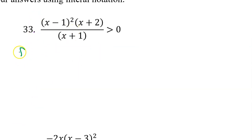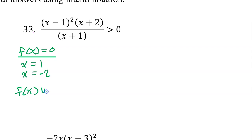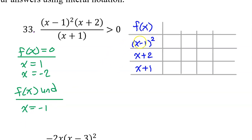Number 33. Again, begin by listing the zeros of f of x — where the numerator equals zero, so x equals one and x equals negative two. We also need where f of x is undefined, which is where the denominator equals zero, so x equals negative one. These are the critical values. Set up your sign chart with a row for every factor. For x minus one squared, be sure to include that exponent. Put the critical values in order from least to greatest: negative two first, then negative one, then positive one.